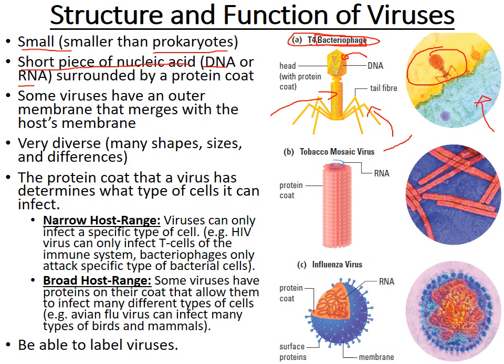The tobacco mosaic virus has a protein coat with an RNA nucleic acid genome inside. The influenza virus also has its protein coat with nucleic acid inside. So a virus is essentially a protein packet with some nucleic acid on the inside. There are many different shapes and varieties, and they all specialize in infecting different things.